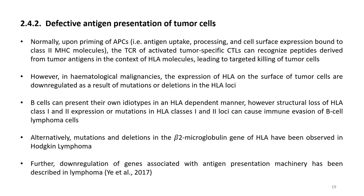The second mechanism is defective antigen presentation of tumor cells. Upon priming of APCs, the TCR of activated tumor-specific CTLs can recognize peptides derived from tumor antigens in the context of HLA molecules. However, in hematological malignancies, the expression of HLA on the surface of tumor cells is downregulated as a result of mutations or deletions in HLA loci. Structural loss of HLA class 1 and class 2 expression, as well as mutations in HLA loci, can cause immune evasion of B cell lymphoma cells. Mutations and deletions in the beta-2 microglobulin gene of HLA have been observed in Hodgkin lymphoma.